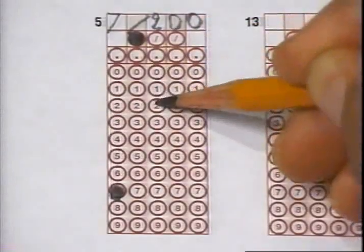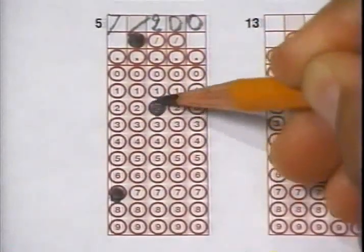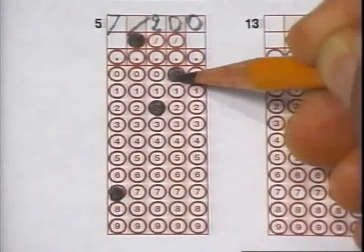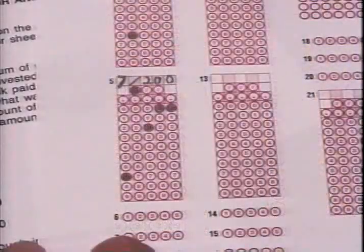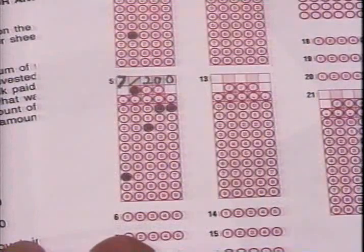Finally, being careful to keep filling in only one circle per column, we fill in the circles under the numerals we wrote for the denominator. Once completed, our answer should look like this.